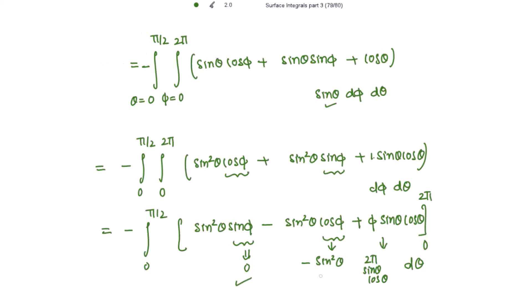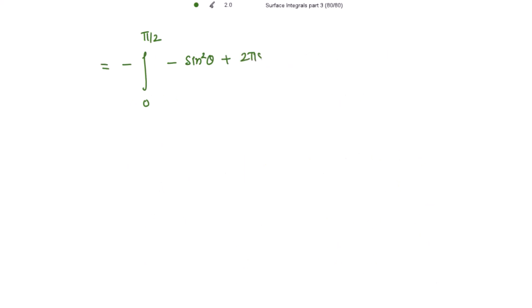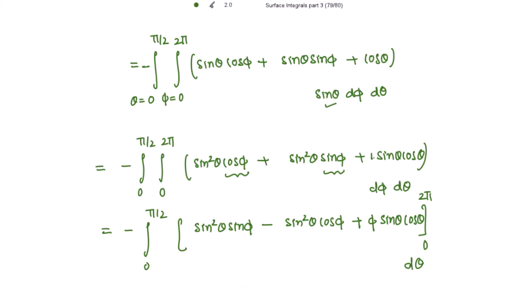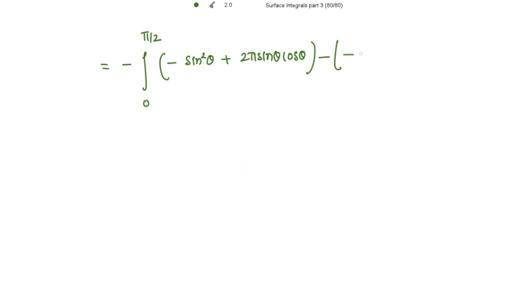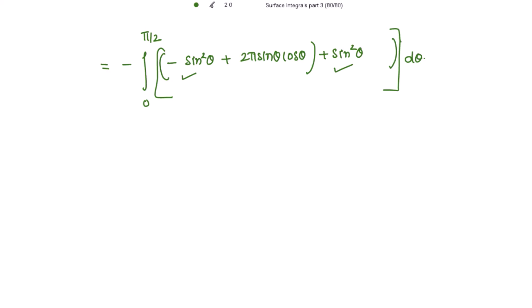So this is minus the integral from 0 to π/2. The first term is 0, the second term is −sin²θ, and the third term is +2π sin θ cos θ. Putting the lower limit φ = 0: sin 0 = 0, cos 0 = 1, giving only the second term −sin²θ. Managing the negative signs, the +sin²θ from the lower limit cancels with the −sin²θ from the upper limit, leaving negative of the integral from 0 to π/2 of 2π sin θ cos θ dθ.